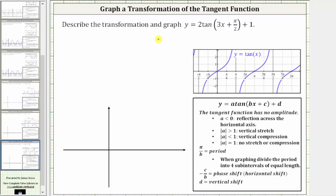We are asked to describe the transformation and graph y equals two times tangent of the quantity three x plus pi over two, plus one. We will determine the transformation based upon the equation being in the form y equals a times tangent of the quantity bx plus c, plus d.